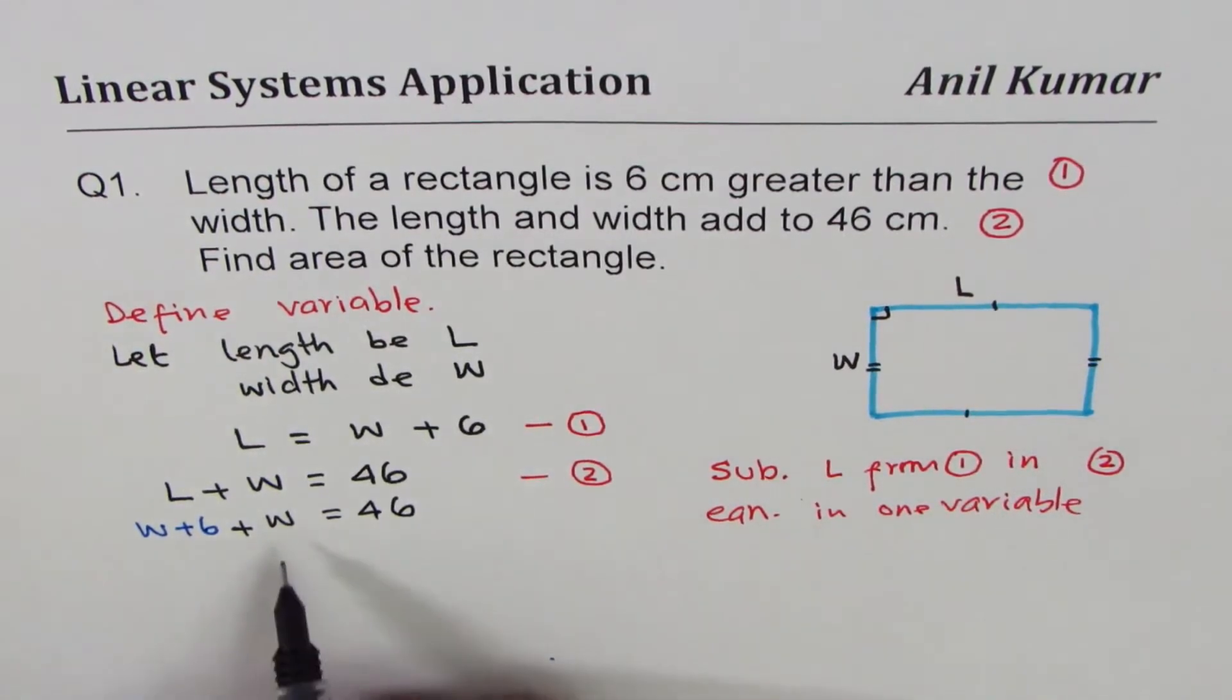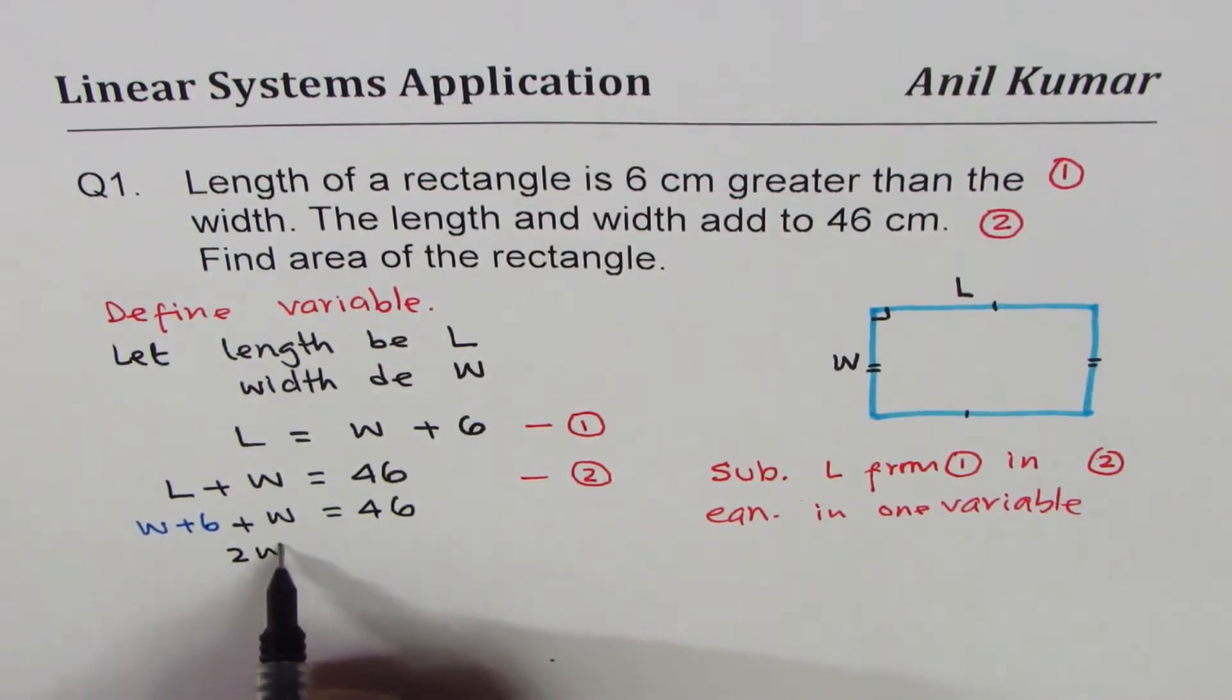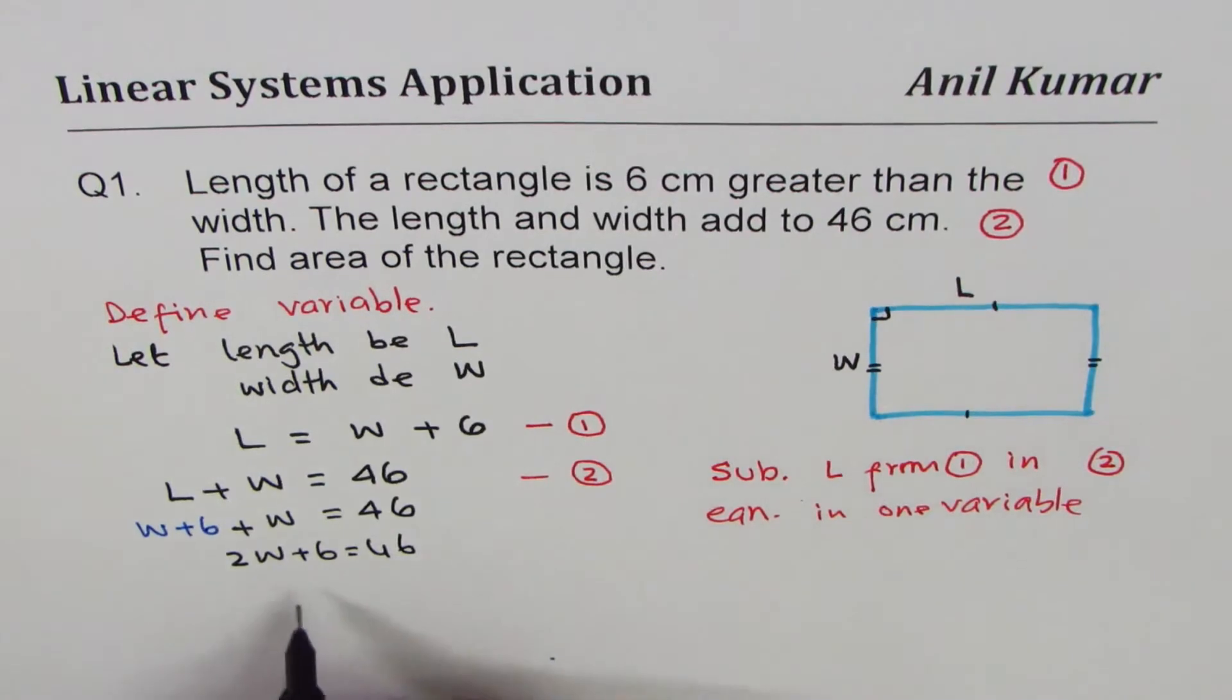For length we already have width equals to 46. Now we have an equation in one variable. Let's find what that variable W is. It is W + W = 2W, so 2W + 6 = 46. Take away 6 from both sides: 2W = 40, and W = 20.